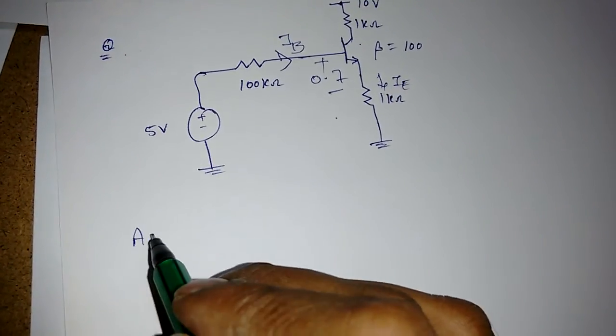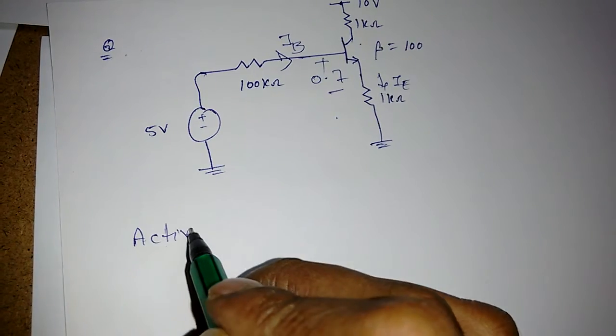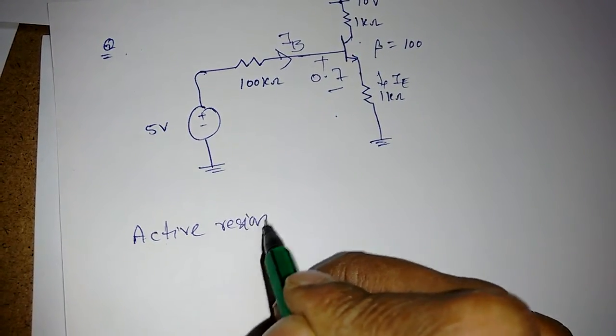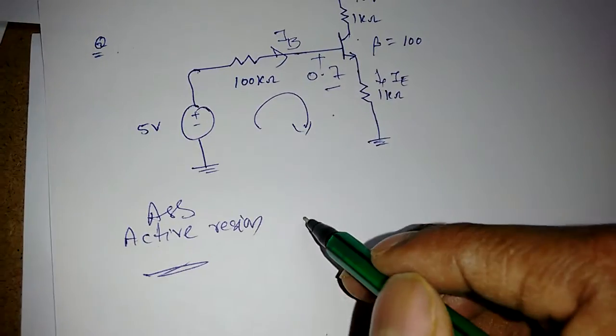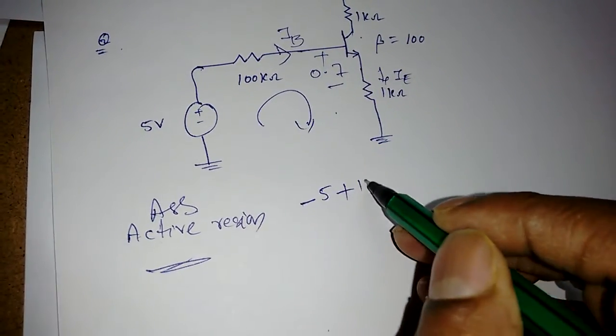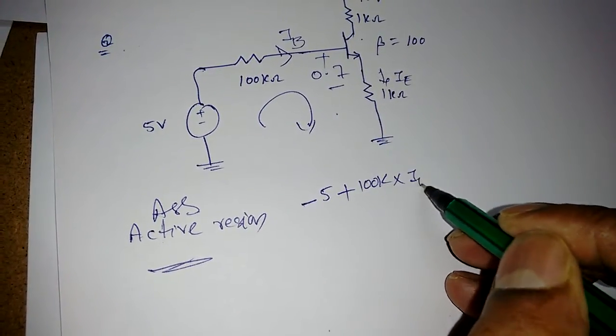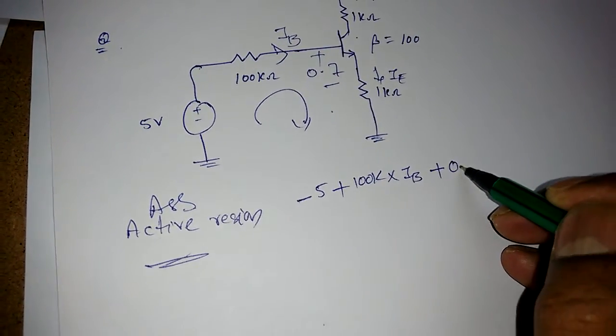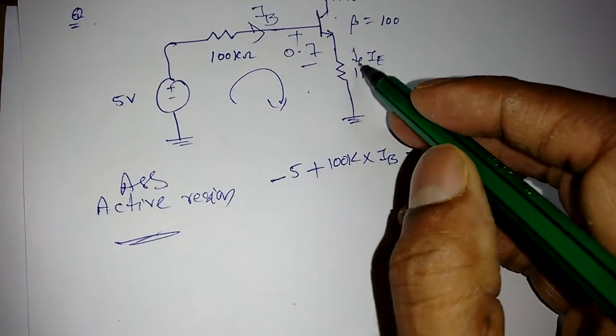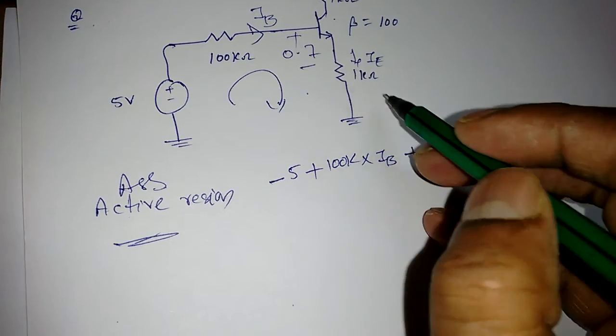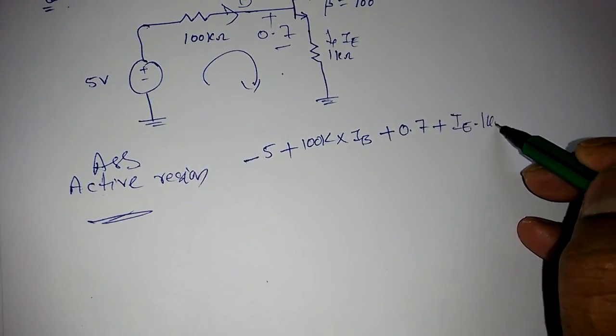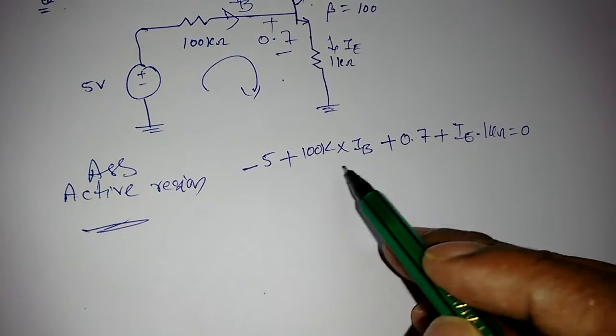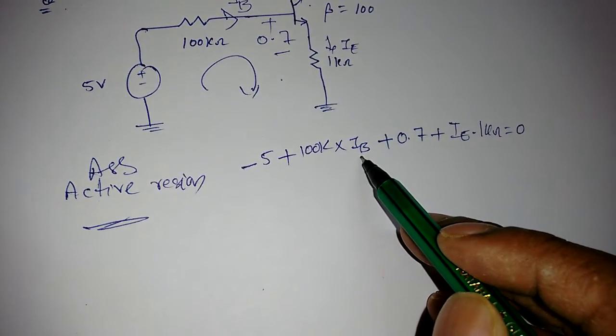Apply KVL: -5 + 100kΩ × IB + 0.7 + IE × 1kΩ = 0. This is one equation, but we have IB and IE, so we need another relation.